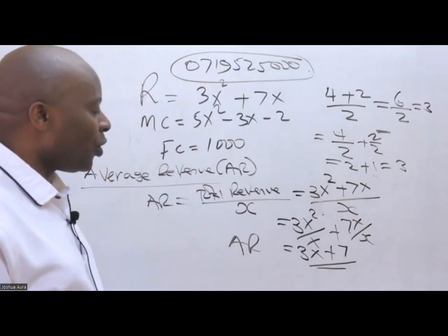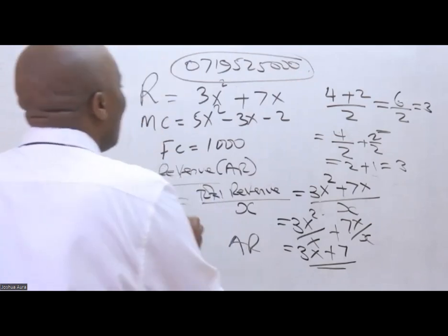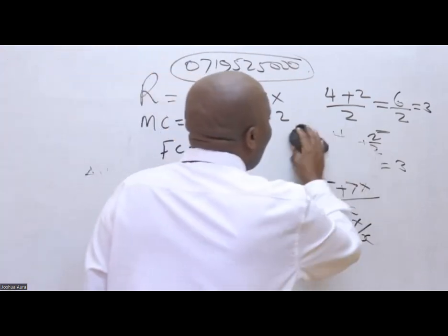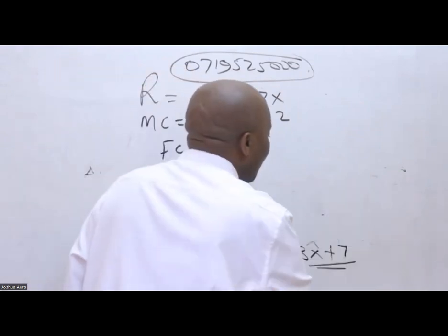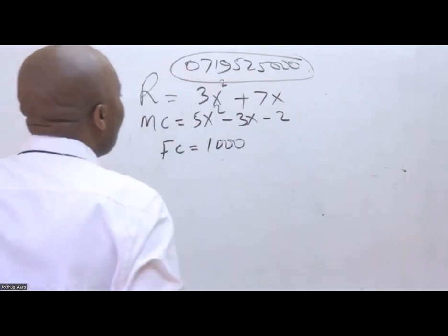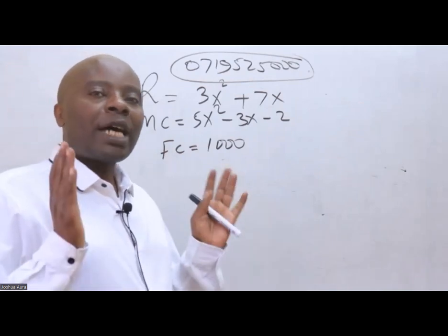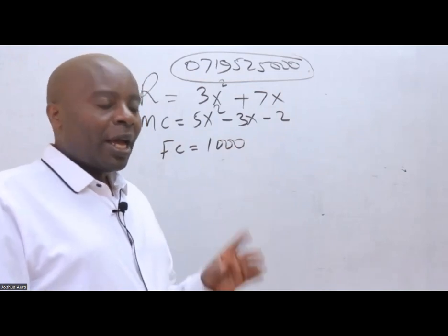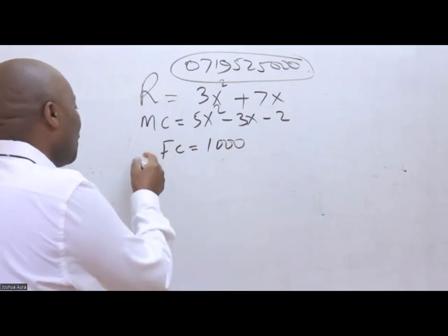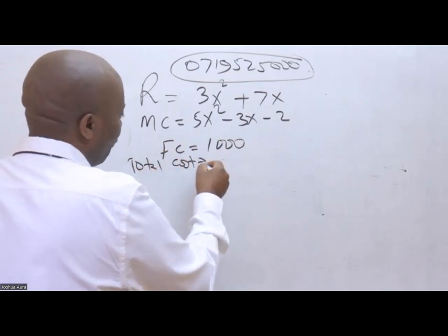Having gotten average revenue, let me go to the next part. They wanted us to give them the average cost. You see, average cost cannot be obtained from marginal cost directly. For me to get average cost, first of all, I have to get total cost. And now the question is, how do we get total cost from marginal?